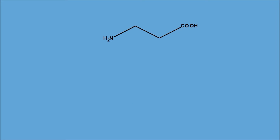Let us take an example. Here we have a three-carbon chain with two functional groups: one is the carboxylic acid and the second is the amine. The functional group priority should be given more to the carboxylic acid than the amine, so we will start the numbering from the carboxylic acid: one, two, and three.